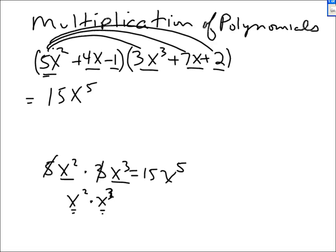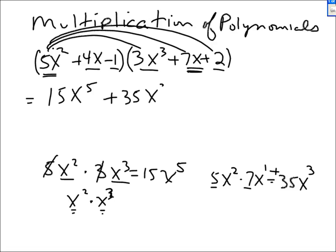Now I'm taking the first term in the first bracket and multiplying by the second term in the second bracket. 5x squared times 7x — 7x to the first, it's understood. 5 times 7 is 35, and I add the exponents: 2 plus 1 is 3. So I get plus 35x cubed.